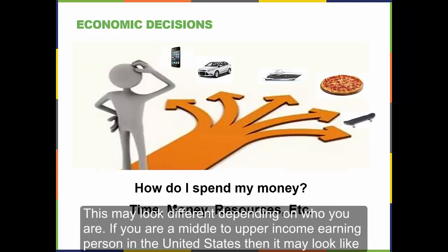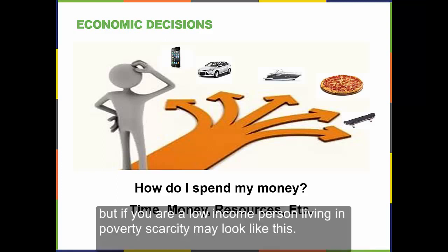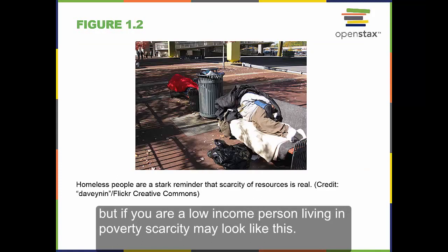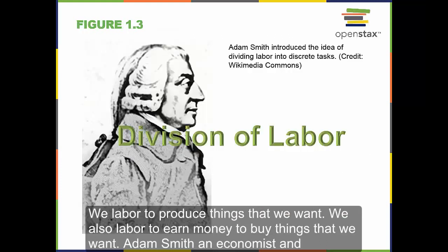This may look different depending on who you are. If you are a middle or upper income earning person in the United States, then it may look like this. But if you are a low income person living in poverty, scarcity may look like this. Whatever the case, if you want more, you or someone working for you must work and produce it. We labor to produce things that we want. We also labor to earn money to buy things that we want.